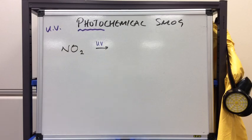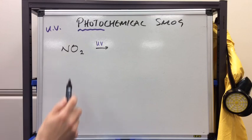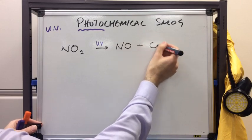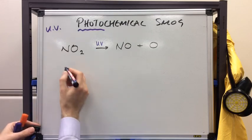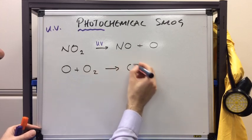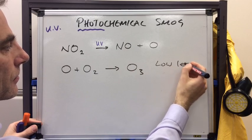Photochemical smog forms as follows. Nitrogen oxides are produced by car engines, and the 'photo' part of photochemical implies UV is involved. UV radiation can break the NO₂ molecule into NO and O. As seen in the ozone video, oxygen atoms can combine with oxygen molecules to form ozone molecules. We want this to happen in the stratosphere, but not in the troposphere — i.e. at ground level — which is known as low-level ozone.